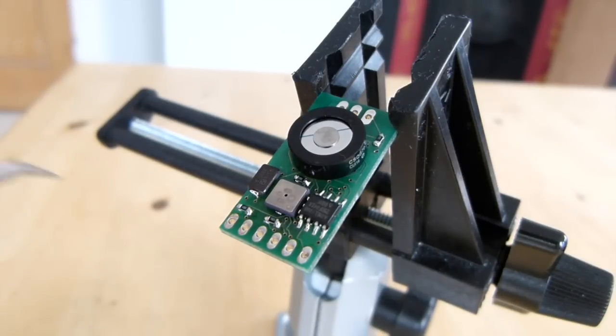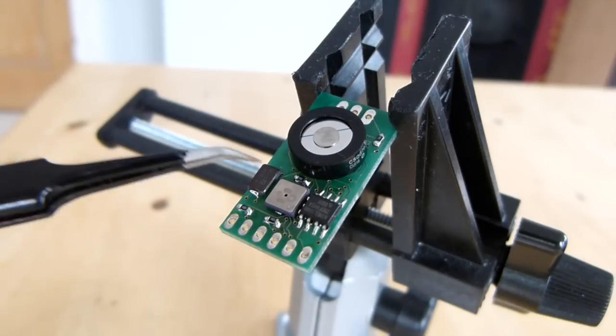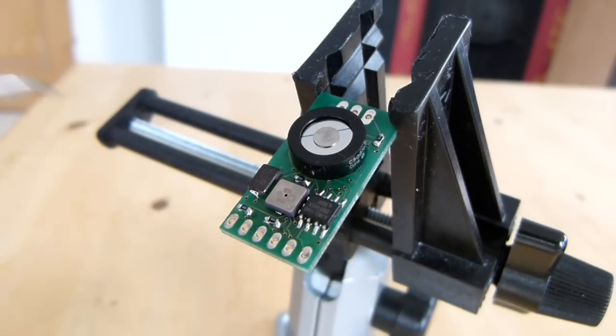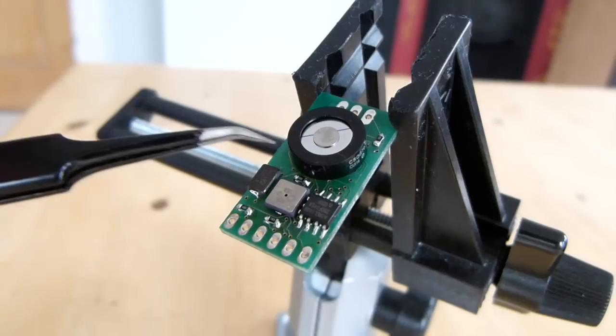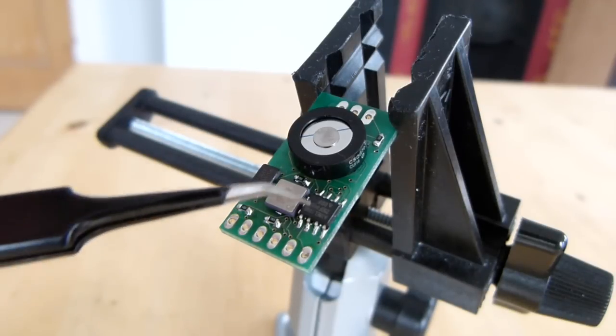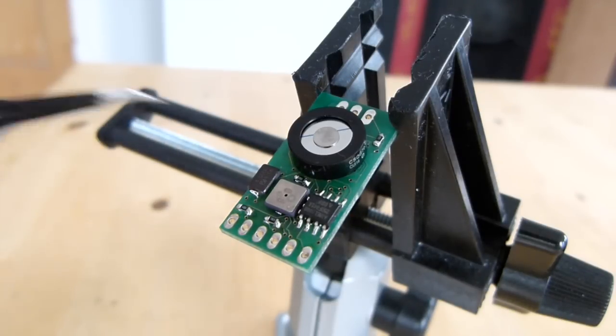It's made by Bosch SensorTech. It's a BMP085 sensor. It measures both pressure and temperature. One important feature is it's fully digital. All of the analog electronics, all the signal conditioning and analog conversion is done inside the case, and it has a pure digital readout to the processor. That's really nice because it means a very, very low noise floor.